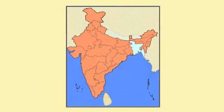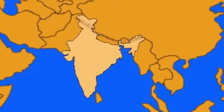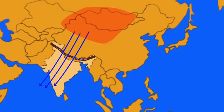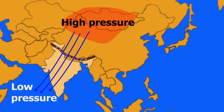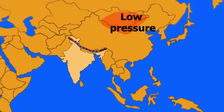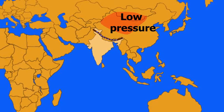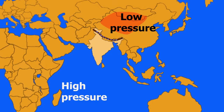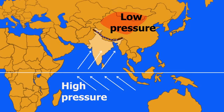The pressure and wind conditions over India are unique. During winter, there is a high pressure area north of the Himalayas, and cooled dry winds blow from these regions to the low pressure area over the oceans to the south. In summer, a low pressure area develops over interior Asia as well as over northwest India, causing a complete reversal of wind direction. Air moves from the high pressure area over the southern Indian Ocean in a southeasterly direction, crosses the equator, and turns right towards the low pressure area over the Indian subcontinent. These are known as southwest monsoon winds, which blow over warm oceans gathering moisture and bringing widespread rainfall over the mainland of India.